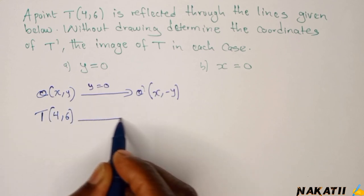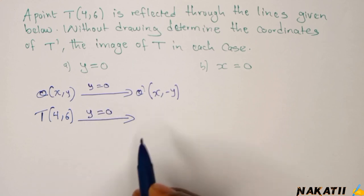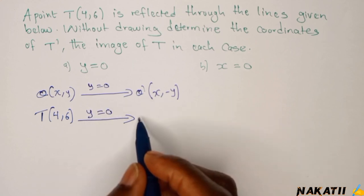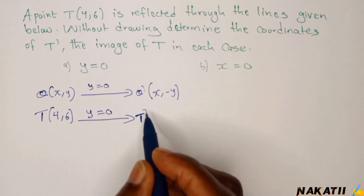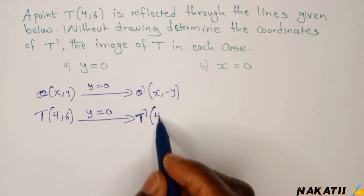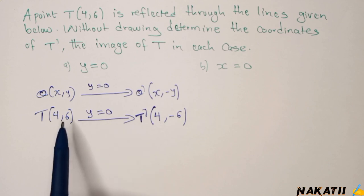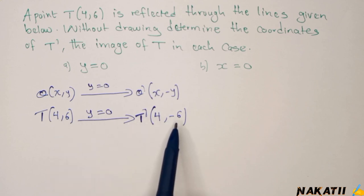So in our case here we have T which is (4,6). When you reflect point T on line y equals 0, which is the x-axis, you will have T prime, which is the image of T, and the coordinates of T prime will be (4, -6).